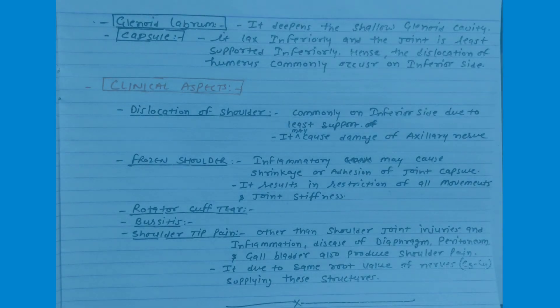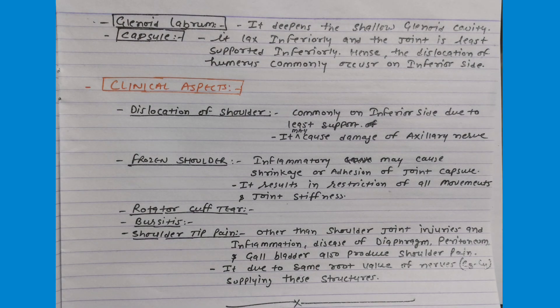In the clinical aspects of the shoulder joint, the first is dislocation of the shoulder, which commonly occurs on the inferior side due to the least support, and it can damage the axillary nerve. The second is frozen shoulder, where inflammation causes shrinkage or adhesion of the joint capsule, resulting in restriction of all movements and joint stiffness. Other clinical conditions include rotator cuff tear, bursitis, and shoulder tip pain.